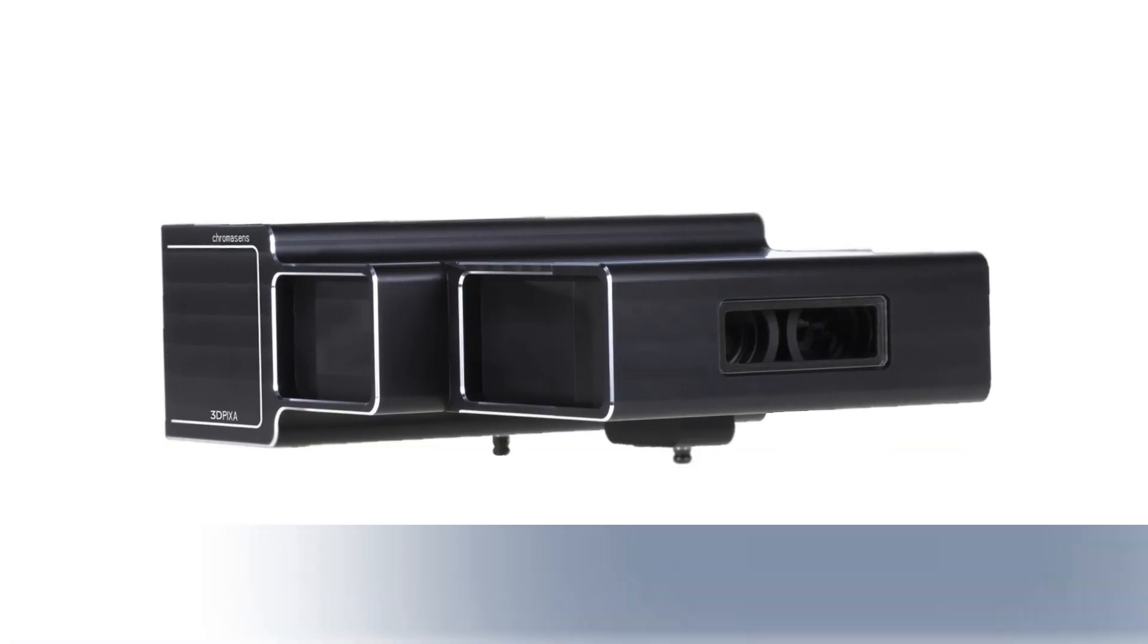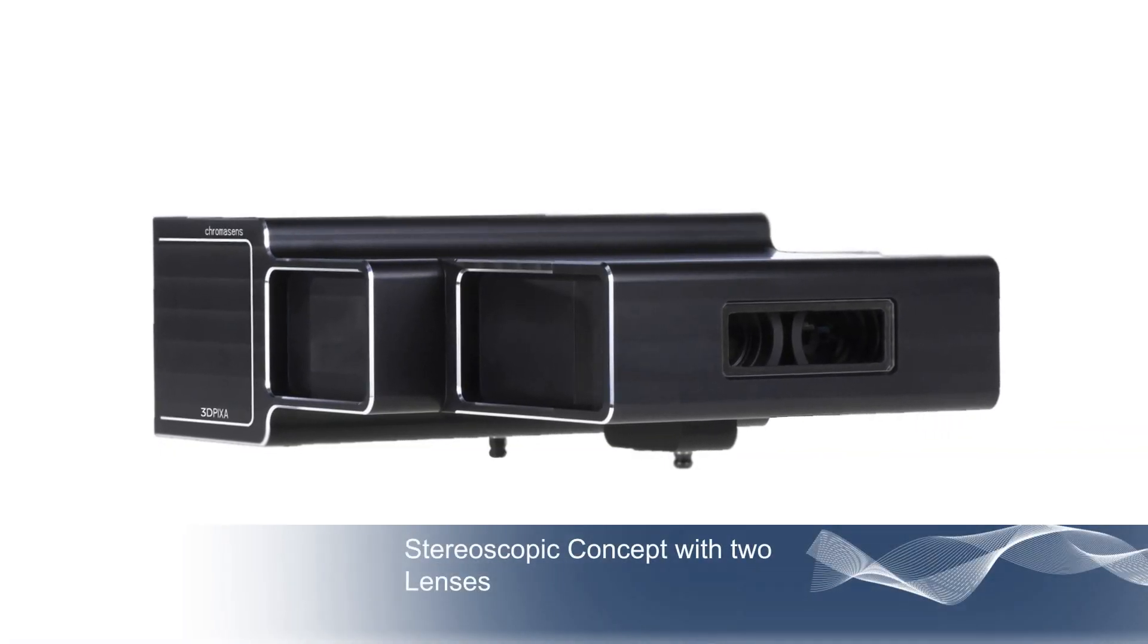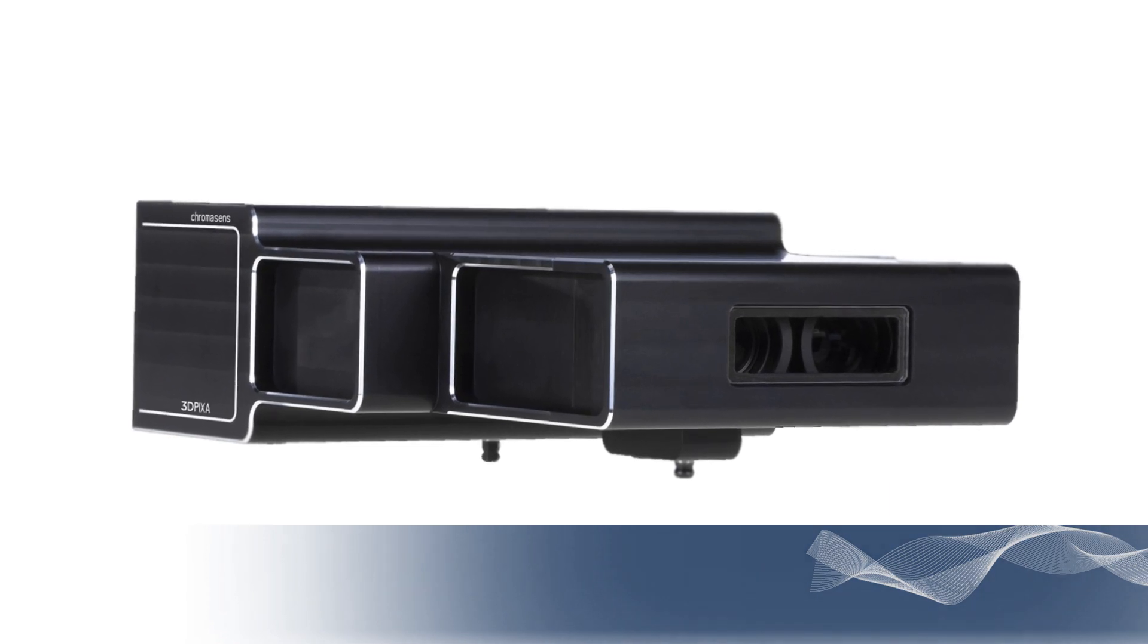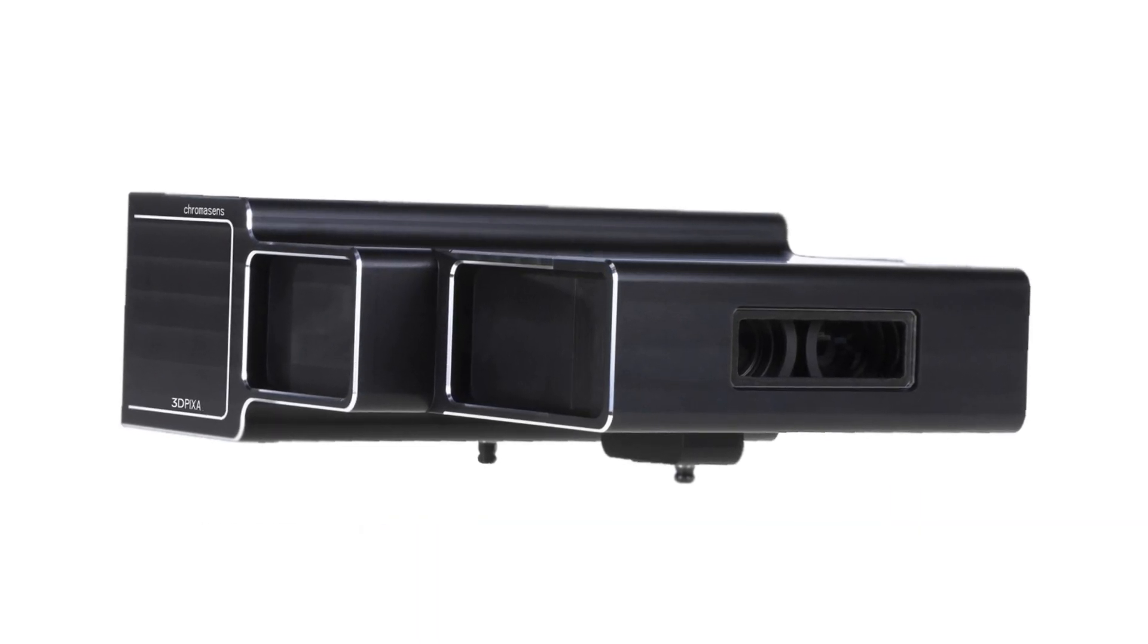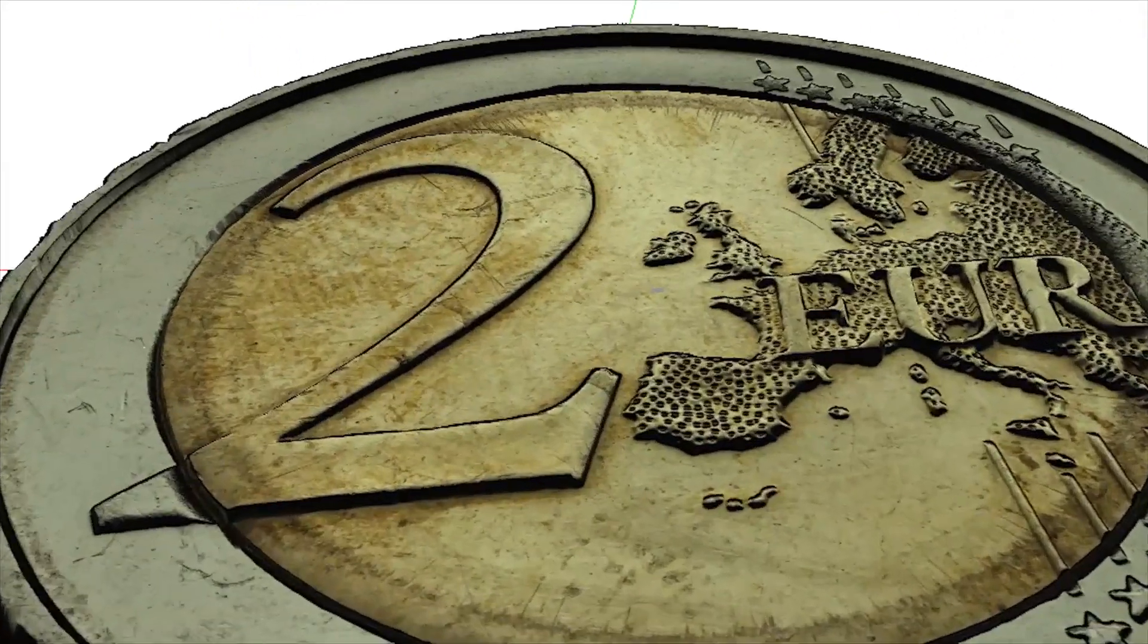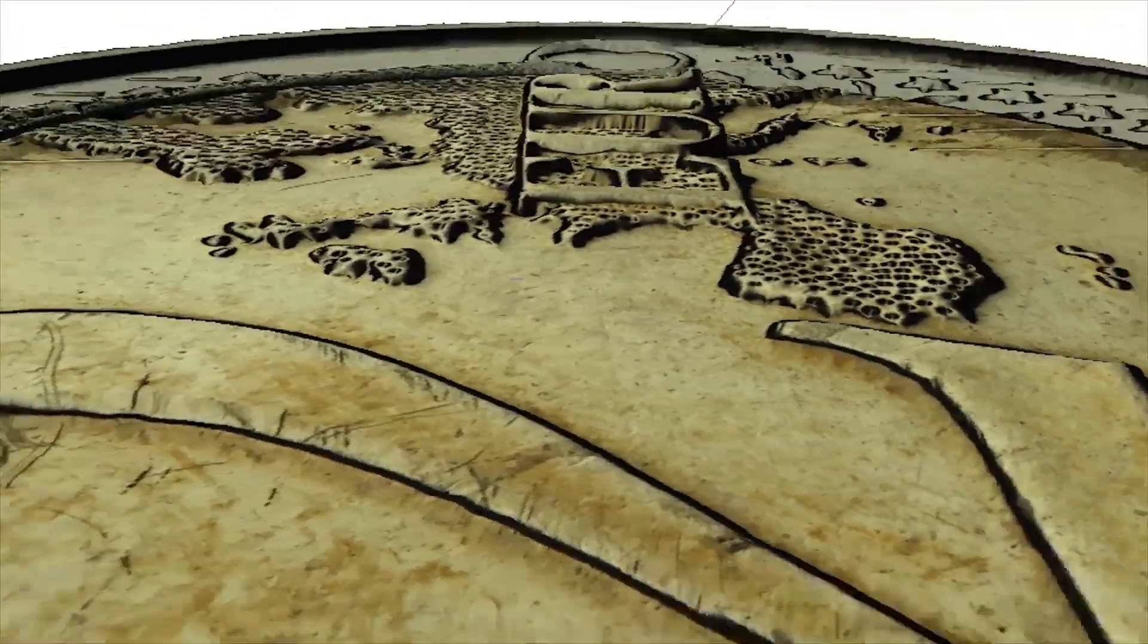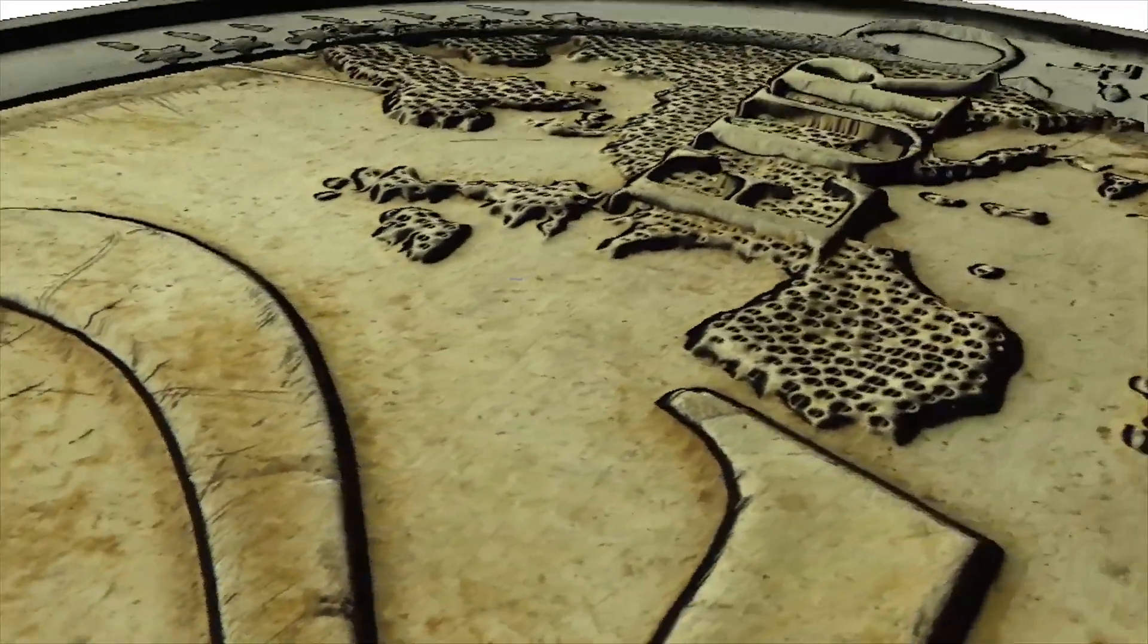The 3D-PIXA camera is based on a stereoscopic concept. The two lenses capture two images from the same object. The two corresponding image points are matched using a correlation method. The distance derived from the matching determines clearly the 3D position of the object point.